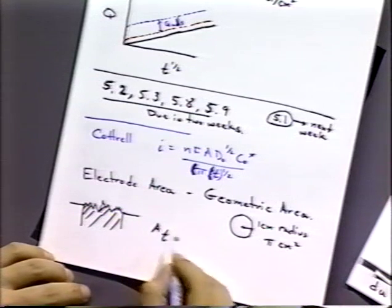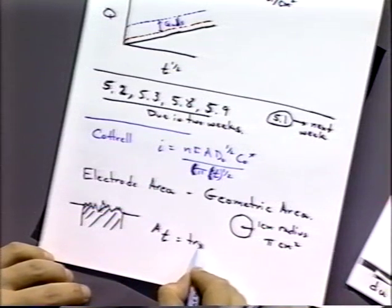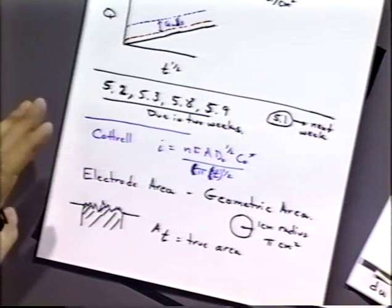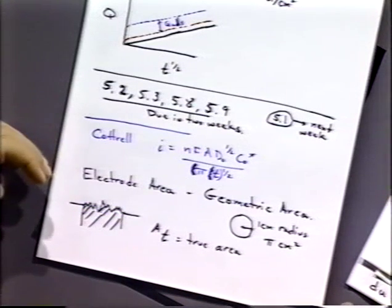In fact, it's not unusual to see electrodes that are 20% larger than the geometric area because of that thing. So we might call AT as the true area. What is the true area? Well, it depends on our measuring stick.